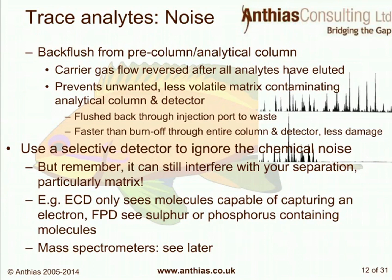We can also use a selective detector to ignore chemical noise, though high levels of involatile matrix on the column can still interfere with separation. For example, an electron capture detector only sees molecules capable of capturing an electron, such as halogenated pesticides. A flame photometric detector can detect sulfur-containing or phosphorus-containing molecules. Mass spectrometers are also a type of selective detector, which we'll discuss further.